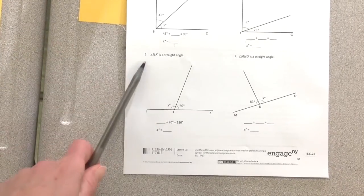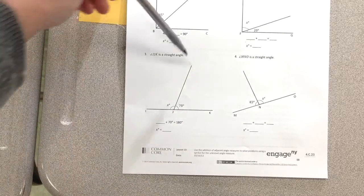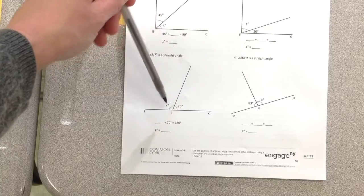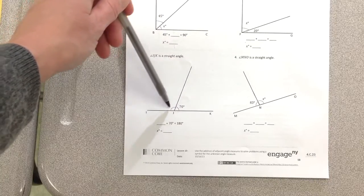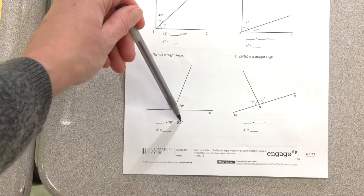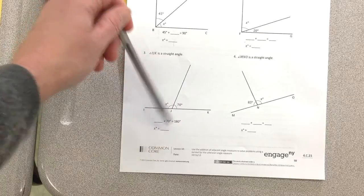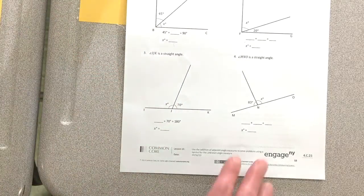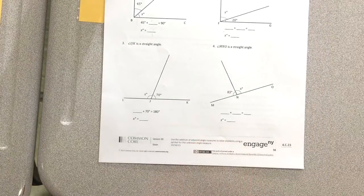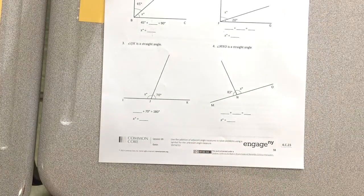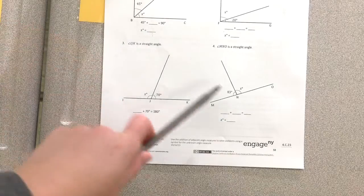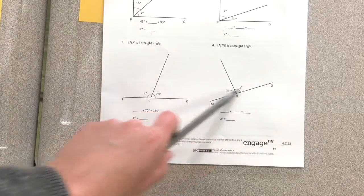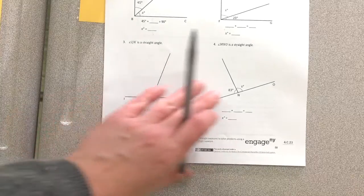Okay, here we have i, j, k is a straight angle. We have a line coming down. This part is 70. We don't know this part, but we know that this plus this is 180. So you have to fill it in here. Same thing. We know that that's a straight angle on number four. We just have to figure out this part. But we know together this and this forms a straight line or a straight angle.